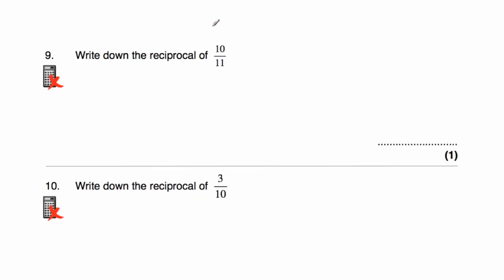Question 9: write down the reciprocal of 10 elevenths. Flipping it over gives us 11 over 10 — that's one possible answer. We could write it as a mixed number: 10 into 11 goes once remainder 1, so 1 and 1 tenth. Or we could convert 11 over 10 to a decimal: 11 divided by 10 is 1.1. Any of those three would be correct; I'll go with 11 over 10.